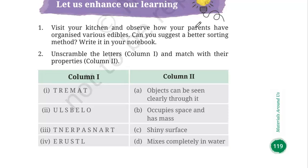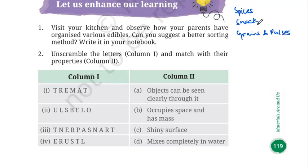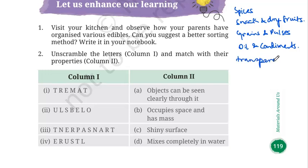The first question asks you to visit your kitchen and observe how your parents have organized various edibles, and suggest a better sorting method. So you can sort spices at one place, snacks at one place, grains and pulses together, and oil and condiments like ghee at one place. You can also use transparent storage containers.